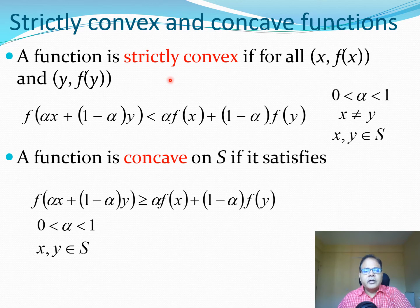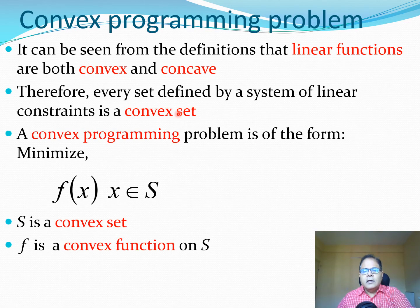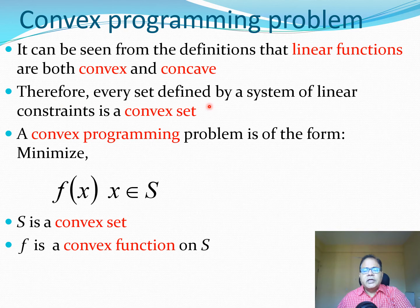The function becomes strictly convex if we use a strict less-than inequality, meaning the function value is strictly less than the value of the line. The function becomes concave if we switch the less-than to a greater-than. You can picture these as convex or concave, similar to convex and concave mirrors from optics. Notably, linear functions are both convex and concave because they satisfy that equation with equality. Therefore, every set defined by a system of linear constraints is a convex set, which is very useful.